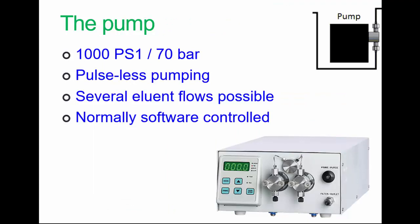The pump is the heart of HPLC. It mentions 1,000 psi, 70 bar. So 70 bar is about 70 times the atmospheric pressure. The pump is pulseless compared to, say, a peristaltic pump in a fish tank, which pumps and stops pumping. It also pumps at a very closely controlled rate, which makes the analysis possible. The process can be controlled from the pump by pressing various buttons, but it's almost always done using software control.